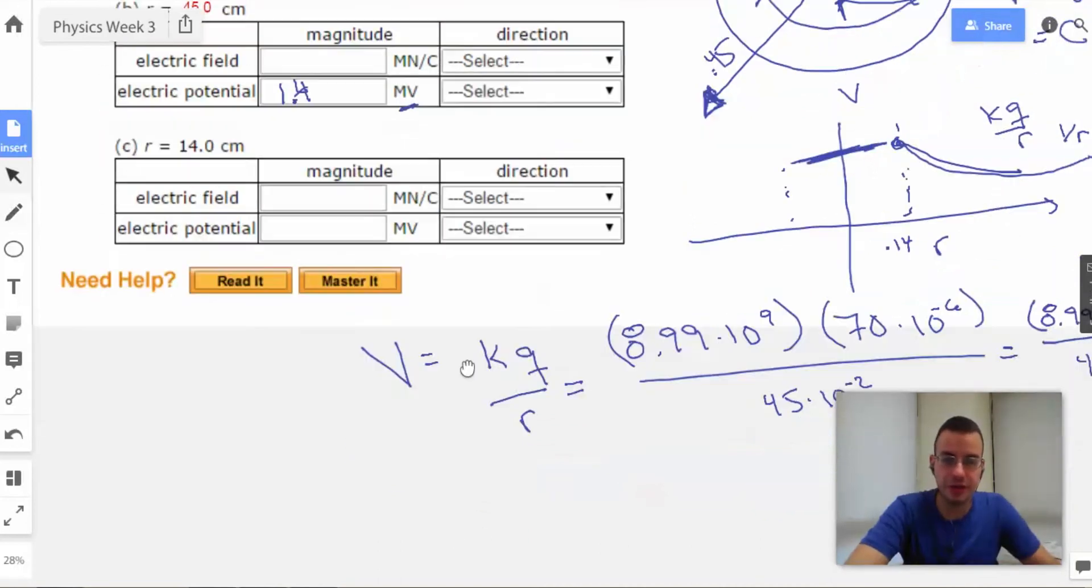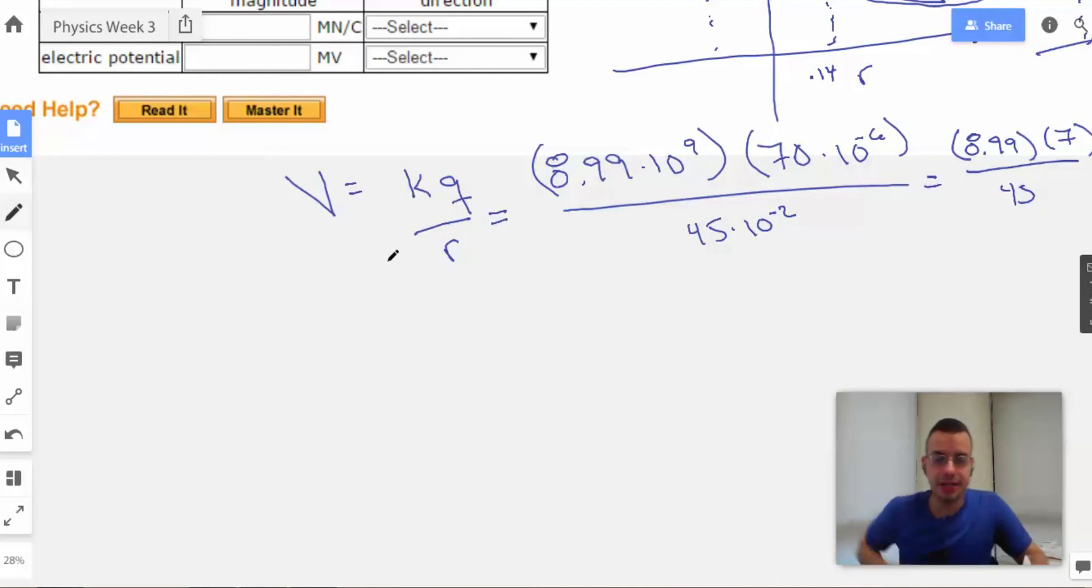Same idea. E equals, electric field equals KQ, this time over R squared.